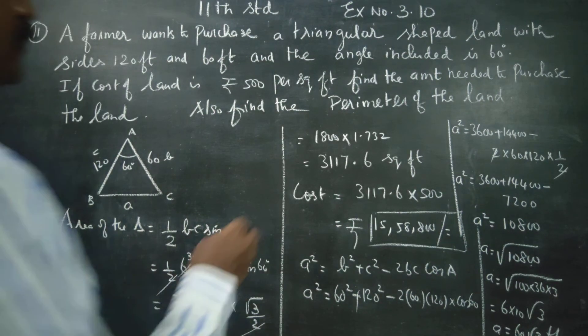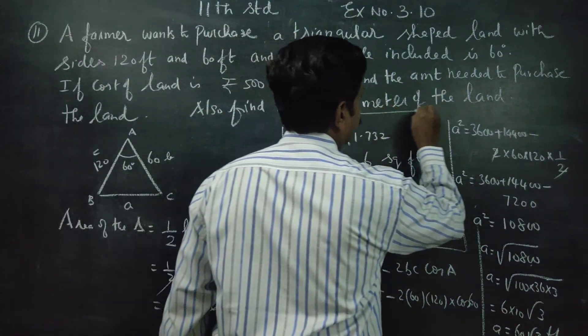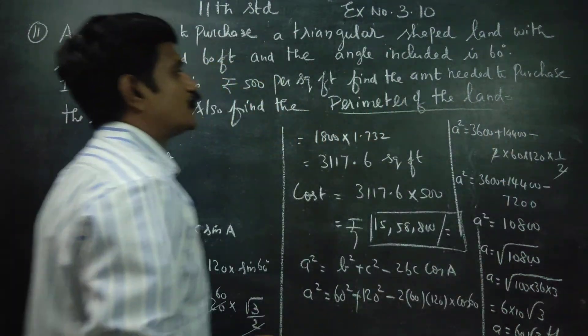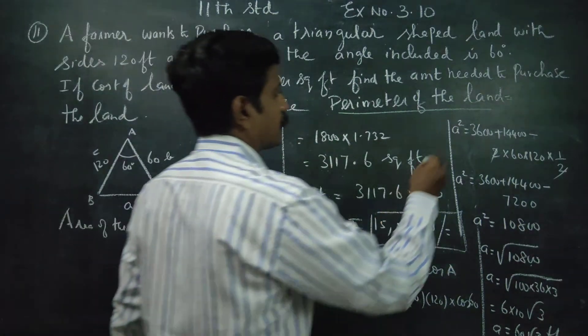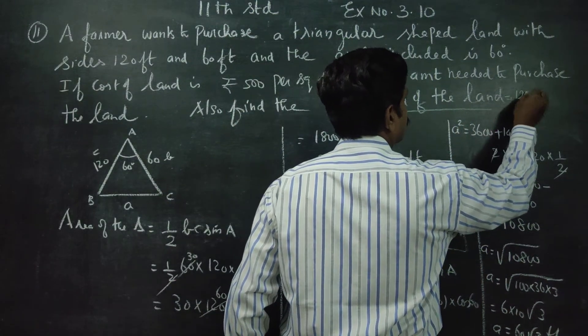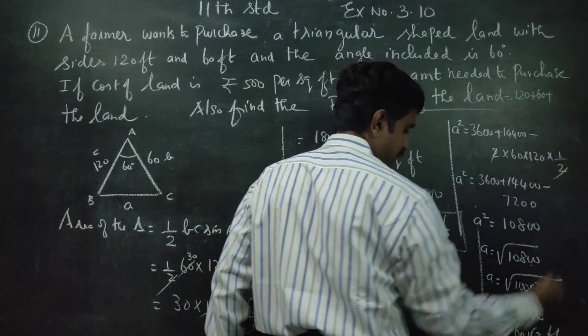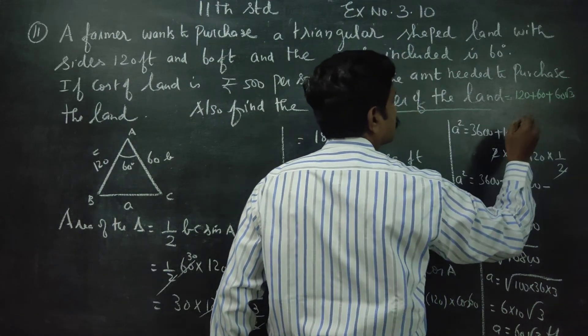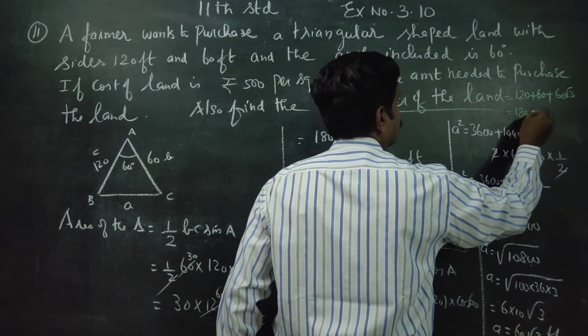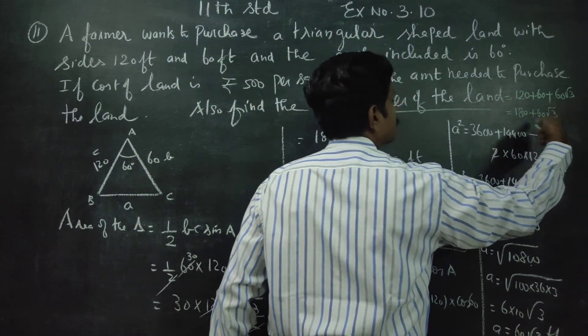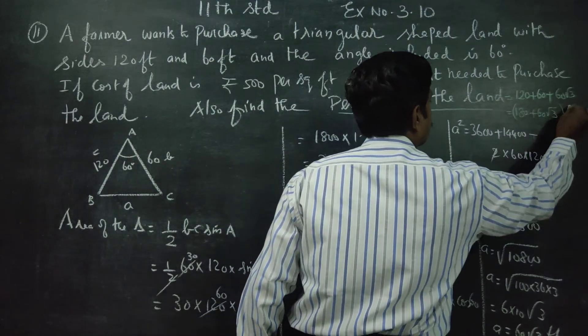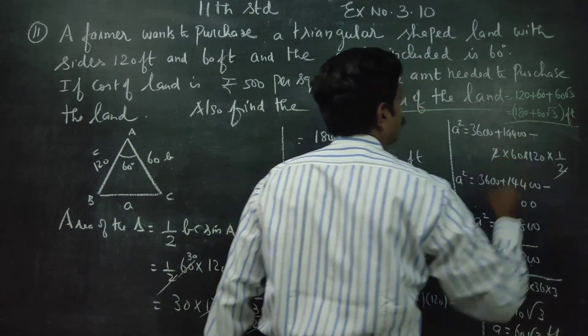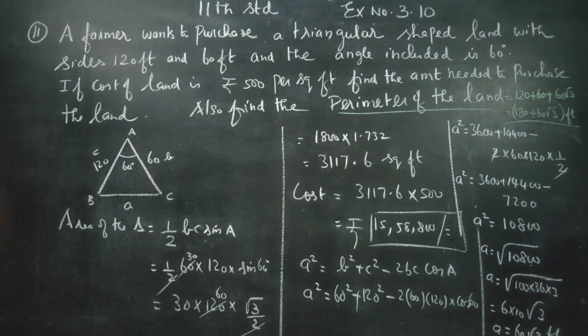Finally, they are asking to find the perimeter of the land. Perimeter is equal to 3 sides added: 120 plus 60 plus 60 root 3. That is 180 plus 60 root 3. When root 3 is 1.732, 60 into that is added to 180. Thank you.